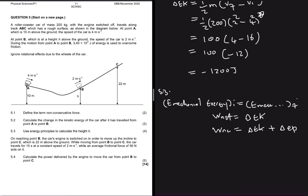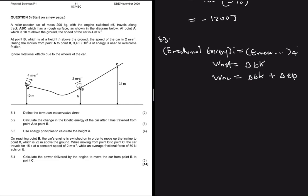I'm going to use the first equation — mechanical energy — and I'd ask you to try using the other equations and post your answers in the comments. So: E_mechanical initially equals KE plus PE. Because the surface is rough, we also need to include the work done by friction on the left-hand side. On the right-hand side, we have KE plus PE only.